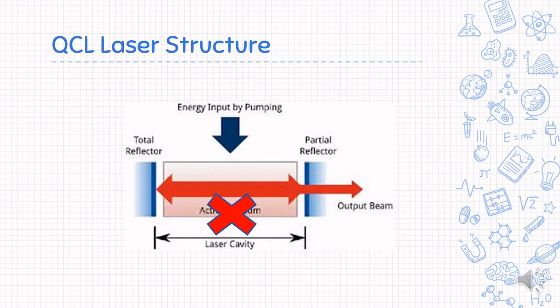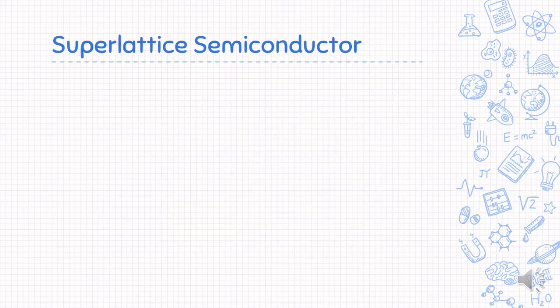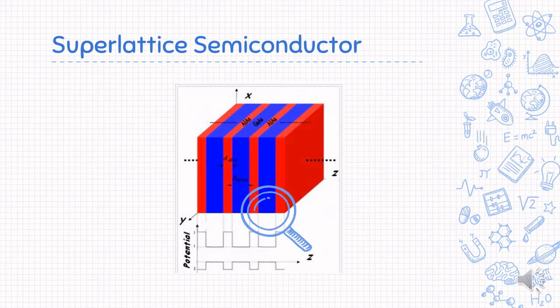Inside Quantum Cascade Laser, the overall structure looks like conventional laser. However, the semiconductor crystal is no longer a pure active region. The semiconductor crystal is composed of superlattice, like combination of indium gallium arsenide and aluminium indium arsenide.